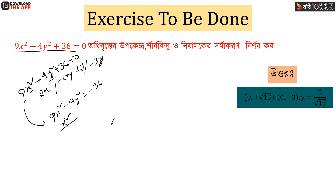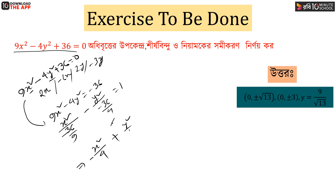So x² divided by (minus 36 divided by 9) minus y² divided by (minus 36 divided by 4) equal to 1. Then we have x² divided by 4 plus y² divided by 9 equal to 1. In the different format: y² divided by 9 minus x² divided by 4 equal to 1.